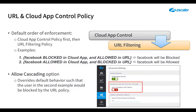For example, if you have a Cloud App Control Rule that allows viewing Facebook but a URL Filtering Policy that blocks www.facebook.com, a user will still be allowed to view Facebook because, by default, the service does not apply the URL Filtering Policy if a Cloud App Control Rule allows the transaction.